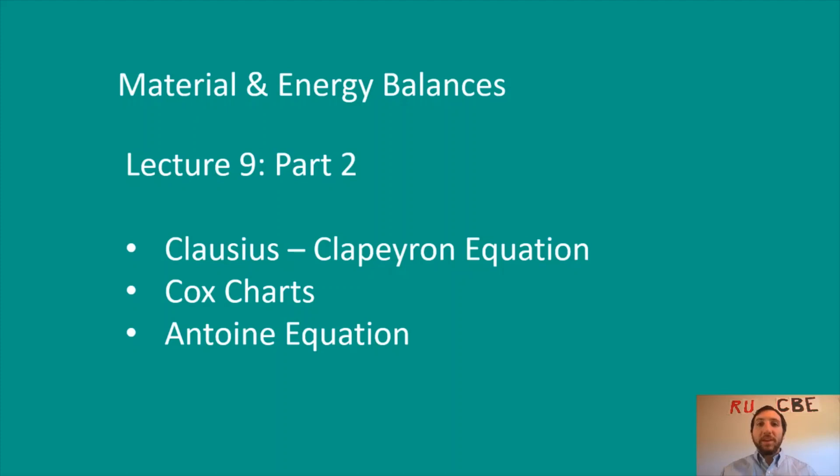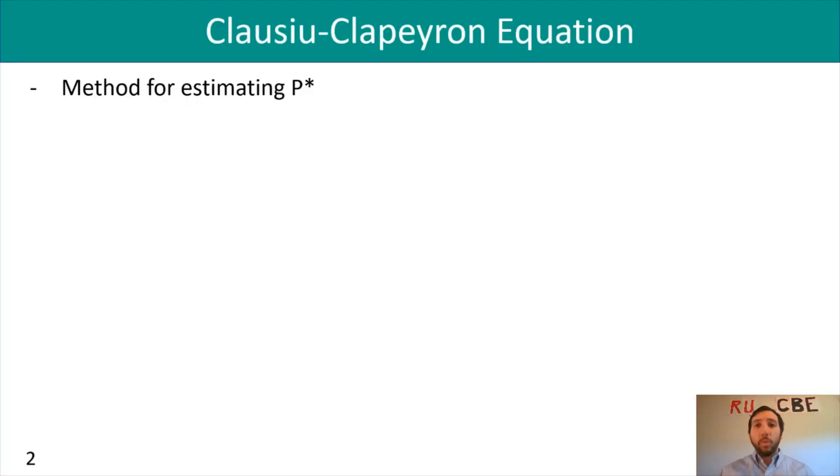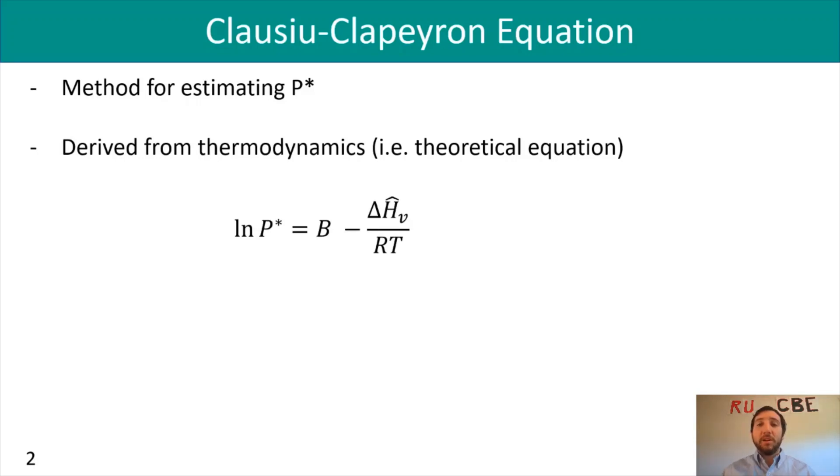To start, we've got the Clausius-Clapeyron equation, one way to estimate our P* vapor pressure. This equation was derived from thermodynamics, so it's strictly a theoretical equation. The Clausius-Clapeyron equation is written as ln P* = B - ΔĤv/(RT), where the hat indicates that the latent heat of vaporization is on a per-unit mass basis.